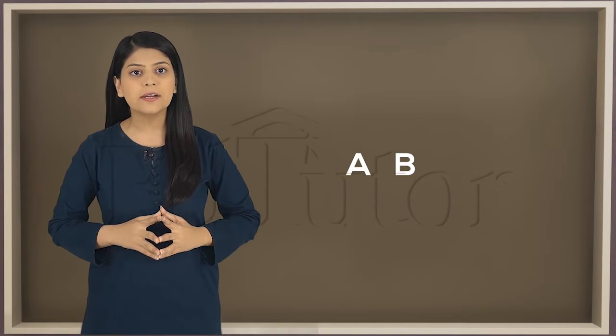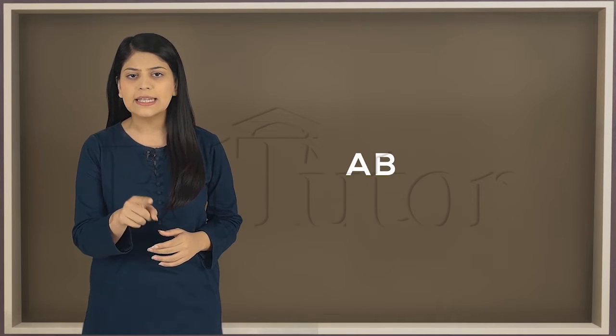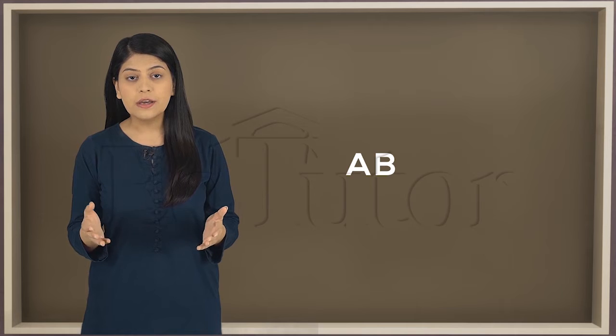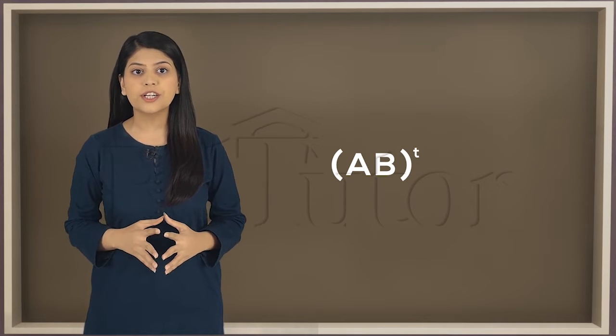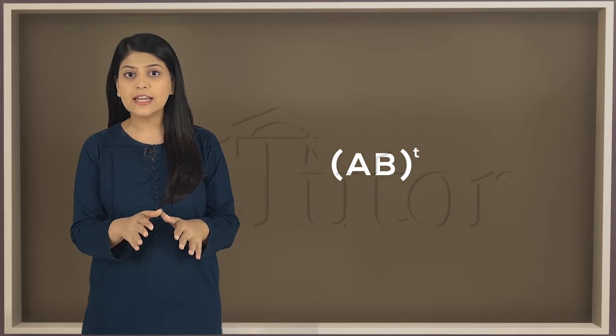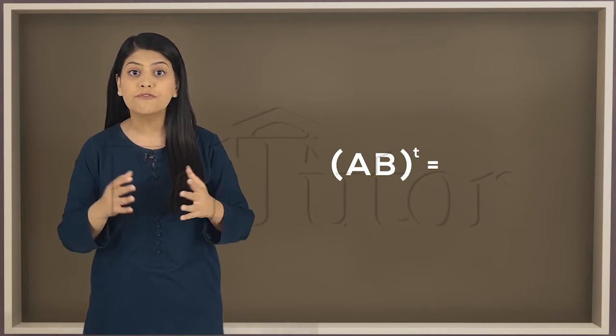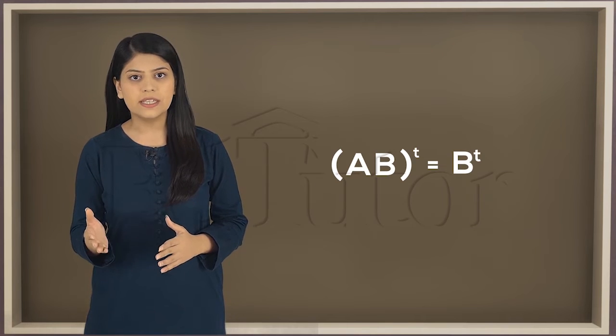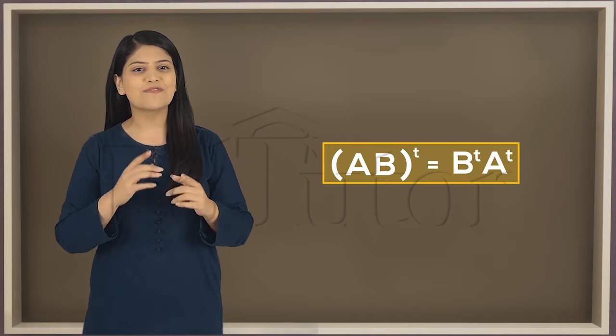It says if you have two matrices A and B and you multiply them together and then find the transpose of this product, the result you get will be equal to the product of transpose matrices B and A. Let's verify it.